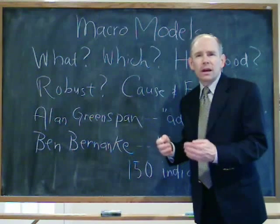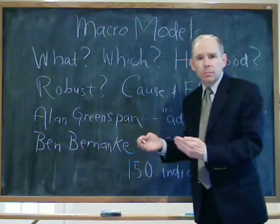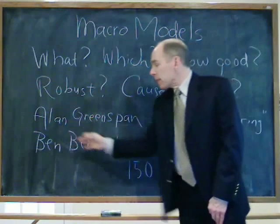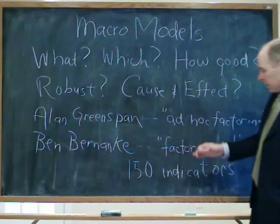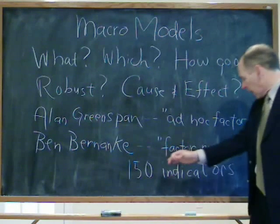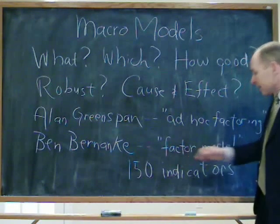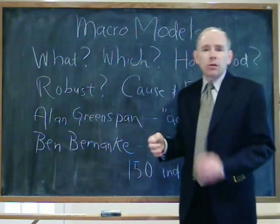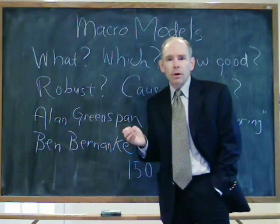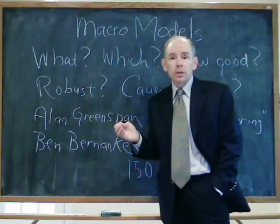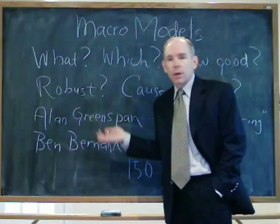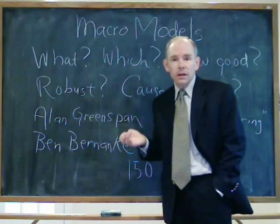So take something that would explain something temporarily — ad hoc factoring. On the other hand, when Ben Bernanke became chairman of the Fed, he started using a factor model that had over 150 indicators in it. He supposedly believed this model could give him some leg up on the macro economy that other people didn't have. Does Goldman Sachs still have a model that's just as good, perhaps rendering his policy ineffective?